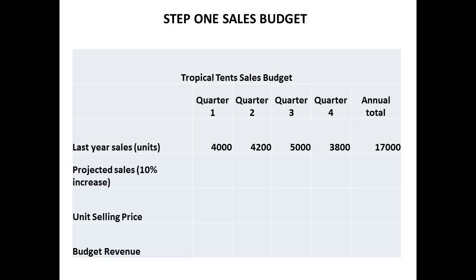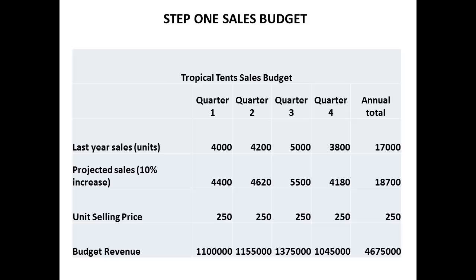We will now work through an example to show these stages in more detail. Tropical Tents produces a special tent for use in warm and humid climates. The company starts by preparing the sales budget. The figures for sales for the previous year are entered onto a spreadsheet. The sales manager has forecast a 10% increase in sales for the coming year, and these figures are then calculated for each quarter. The unit selling price is entered onto the spreadsheet. The budget revenue is then obtained by multiplying the projected sales by the unit selling price. We now have a sales budget.